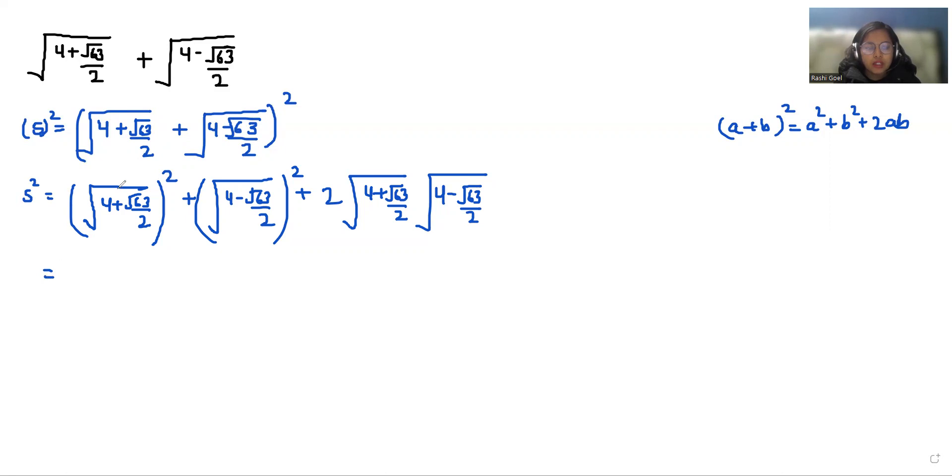Now with the help of these, square and square root eliminate. So what is left is 4 + √63/2 plus 4 - √63/2, plus we can use a very famous identity again: a² - b²